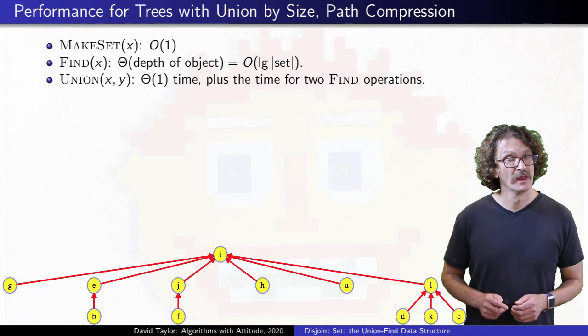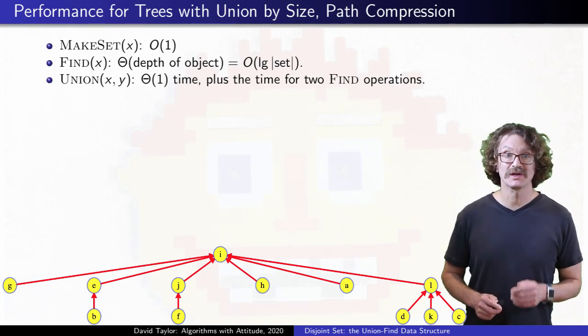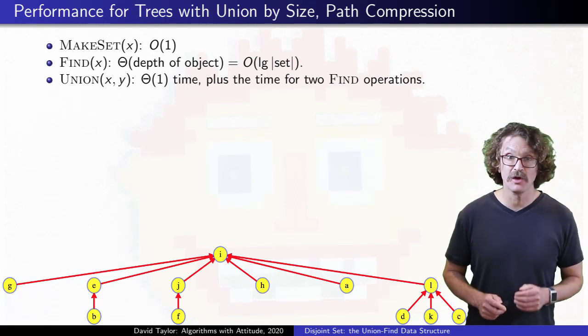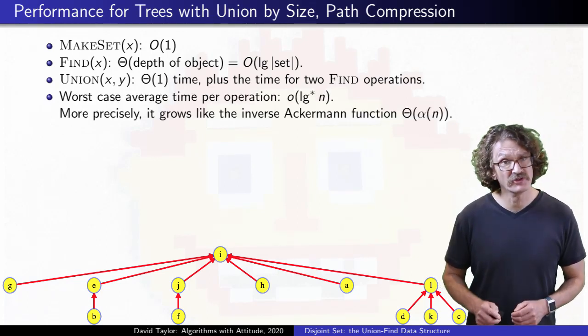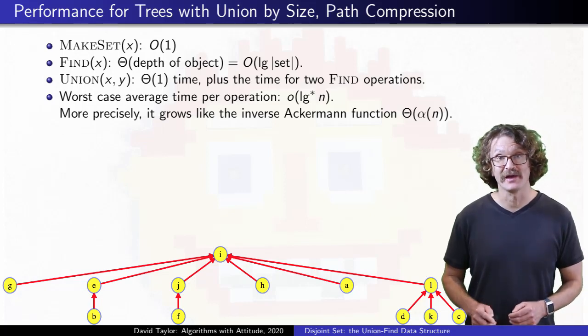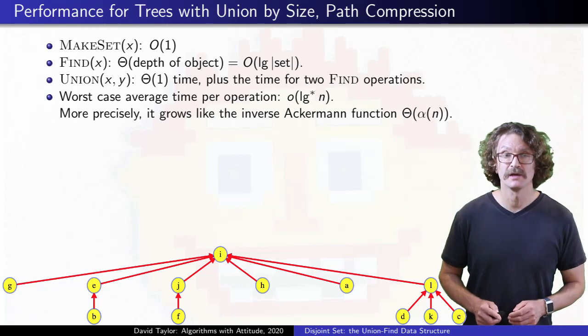How much better? If you have n objects, the average time per operation will grow strictly, asymptotically slower than log star. More precisely, it can grow as fast as the inverse Ackermann function, which I won't even try to define here.